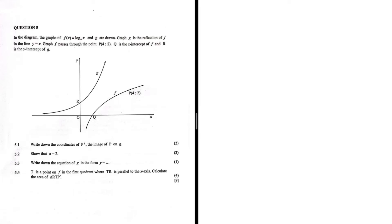Let's take a look at what is happening. In the diagram, the graphs of f(x) = log_a(x) and g are drawn. Graph g is the reflection of f in the line y = x. We need to make sense of that — the graph of g is the reflection of f in the line y = x.